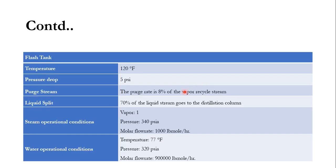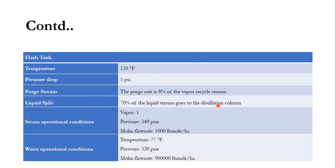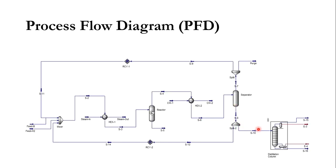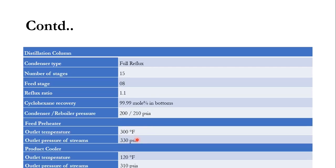The outlet pressure of both streams — water and product — in the product cooler is 310 PSIA. The purge stream is 8% of the vapor recycle stream S7, with the remaining 92% being S9. Similarly, 70% of the liquid stream goes to the distillation column as S10, while 30% is recycled back. For steam in the preheater: vapor value is 1, pressure is 340 PSIA, molar flow rate is 1000 lb-mol/hr. For water: temperature is 77°F, pressure is 320 PSIA.